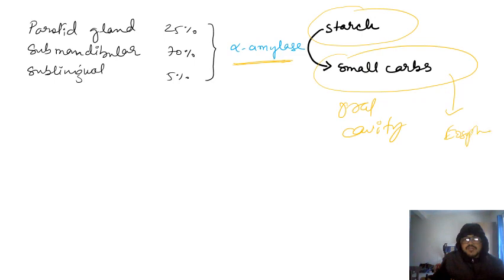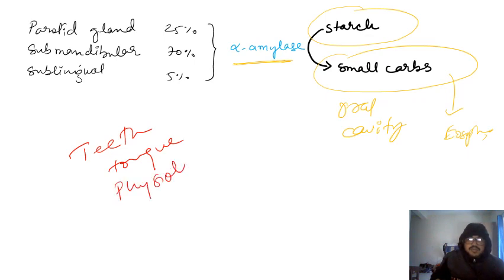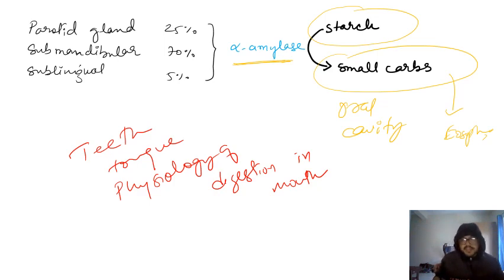The food then passes on to the esophagus. So today we have discussed three things: teeth, tongue, and the physiology of digestion in the mouth. That's all for today, thank you very much, I hope you enjoyed the video.